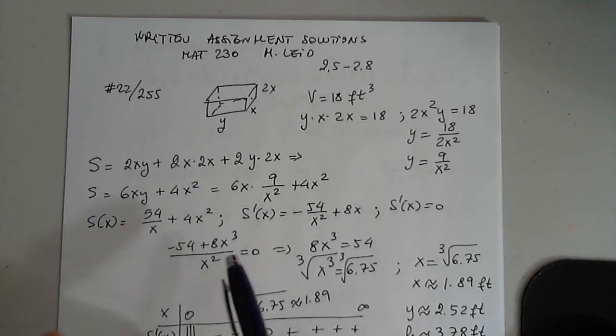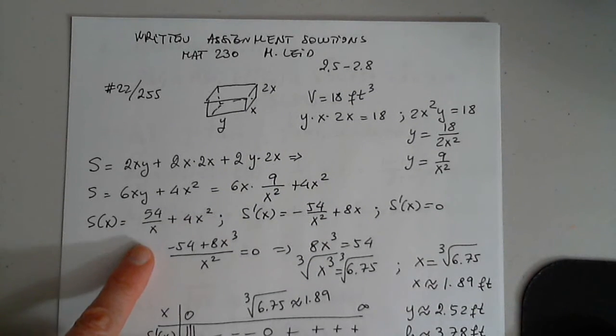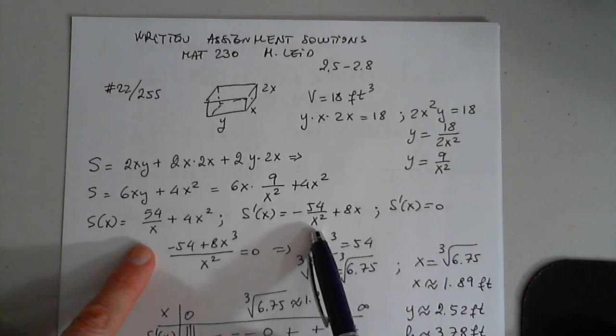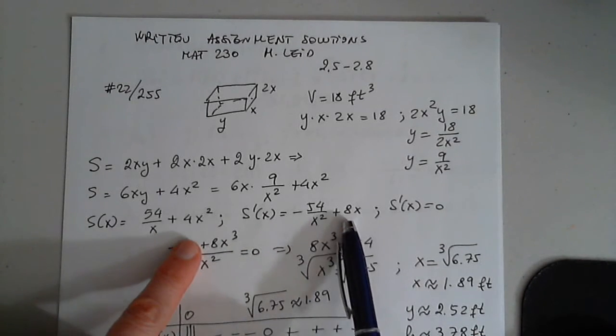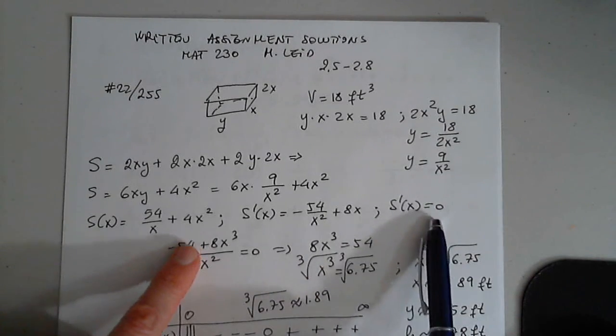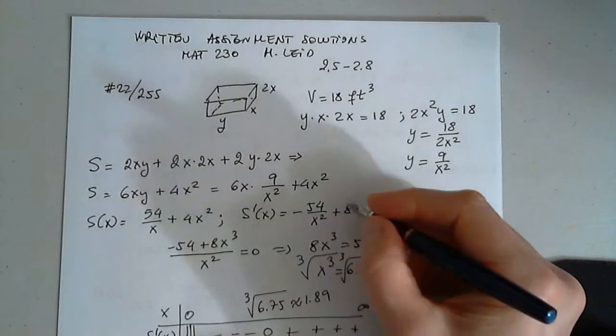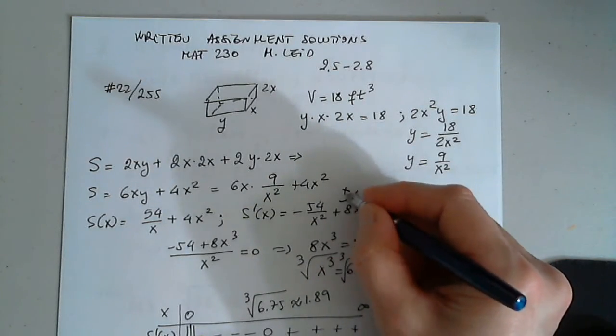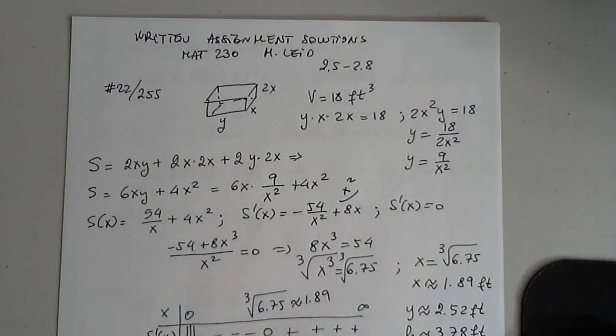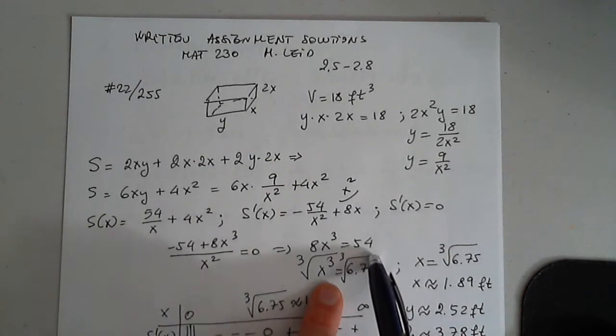We differentiate this. Remember 1 over x prime is negative 1 over x squared, so that's how we get negative 54 over x squared, and then 8x. We set this equal to 0. We have to find the least common denominator, multiplying 8x by x squared. So we get negative 54 plus 8x cubed. A fraction is 0 only when the top is 0.